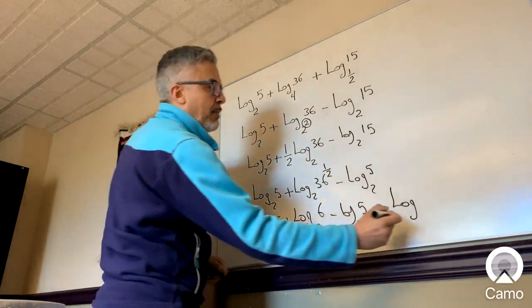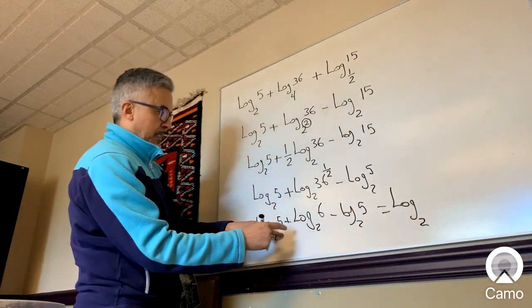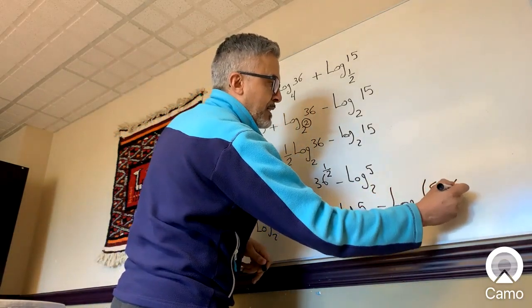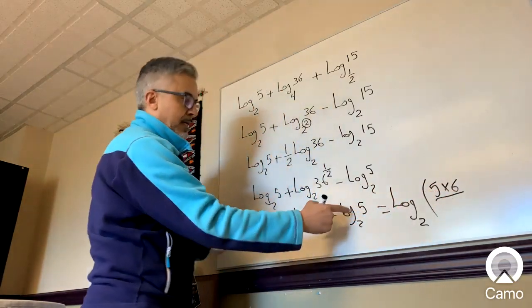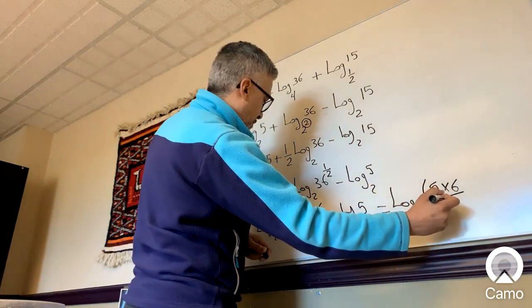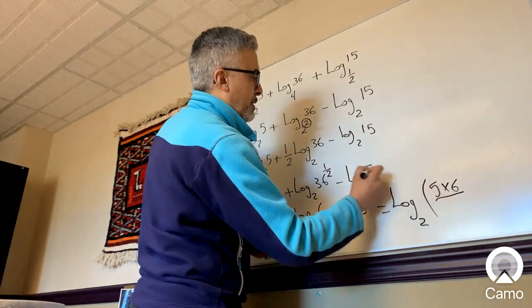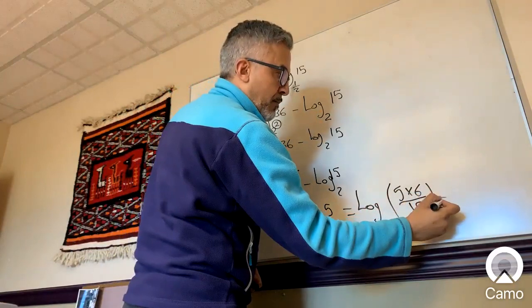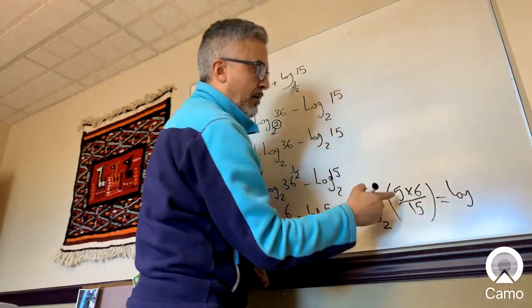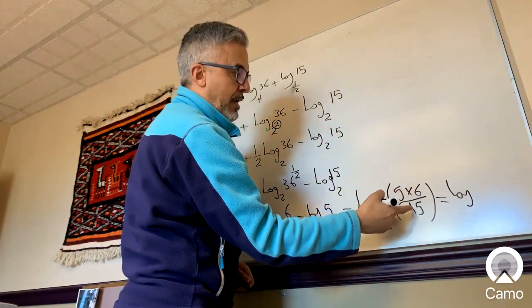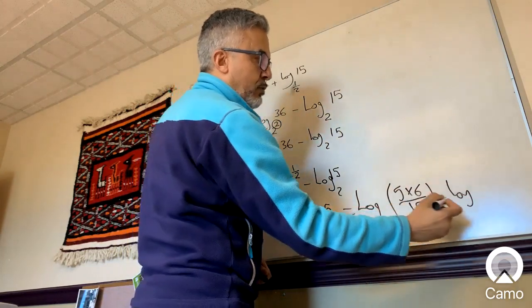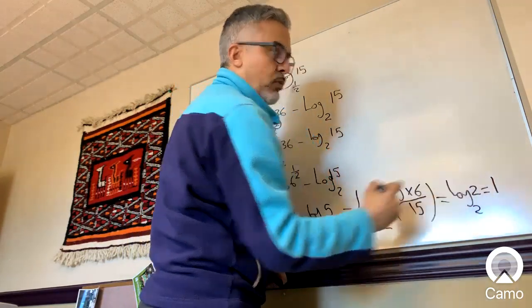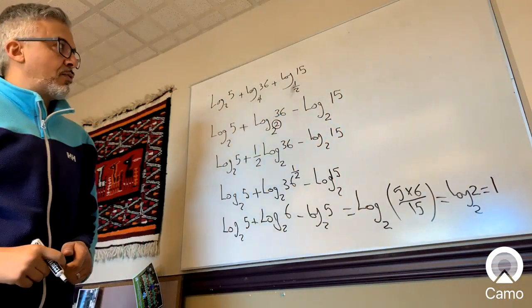Now you can combine them, you get log base 2. Since these are added, you multiply the 5 and 6, and since this is minus, you divide by 15. And this equals log of 5 times 6 is 30, 30 divided by 15 is 2, so that becomes log base 2 of 2, and log base 2 of 2 equals 1. So that's the answer for that.